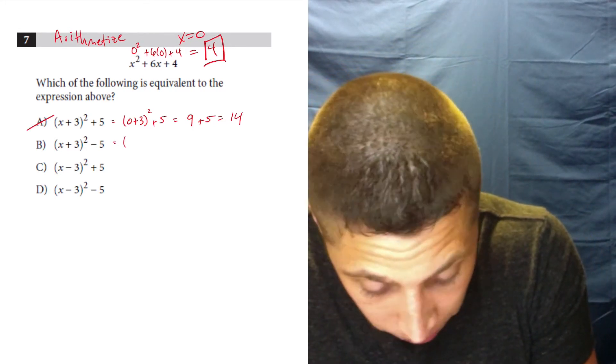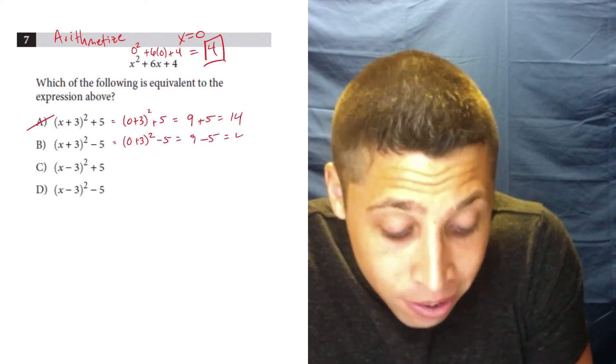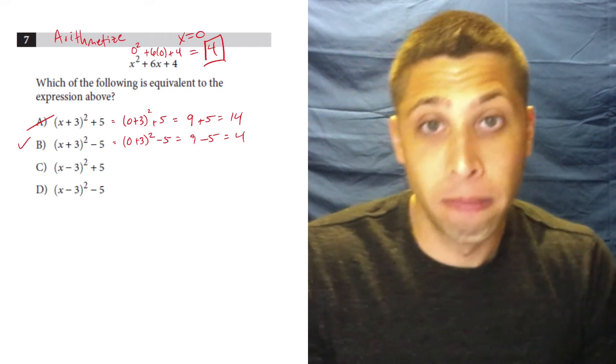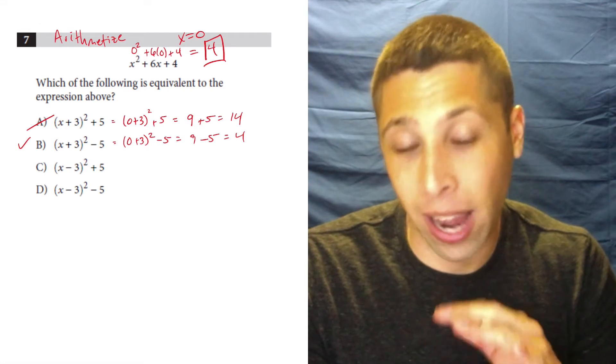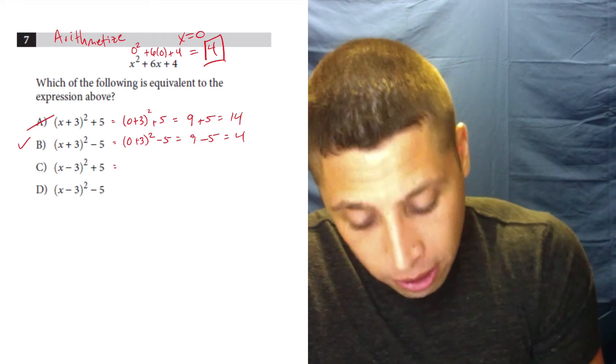Choice B. Zero plus three squared minus five. So again, nine minus five is four. But I have to keep going, because sometimes I pick a number that works for multiple answers. So I have to just be thorough whenever I arithmetize and try every choice. So let's keep going.